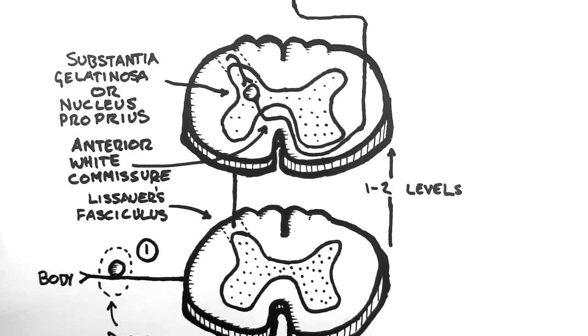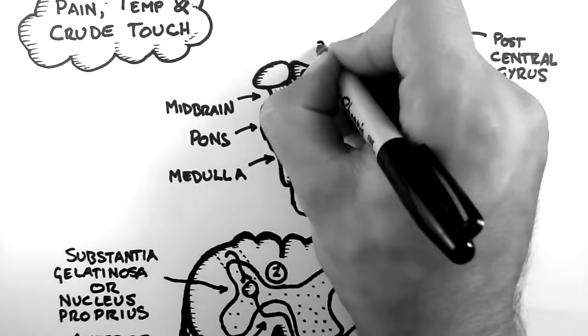The first is in the dorsal root ganglion. The second is in the dorsal horn of the spinal cord. And the third is in the thalamus.